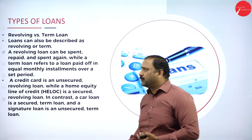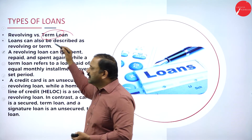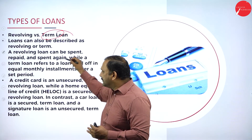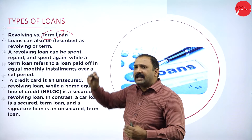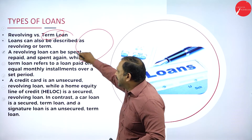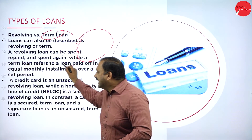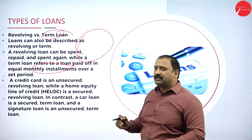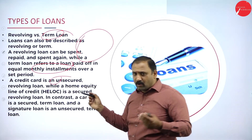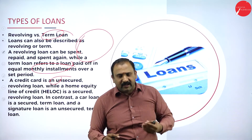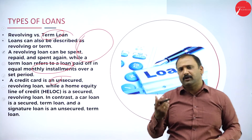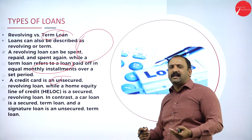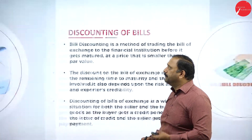Another type is the revolving versus term loan. A revolving loan is one that can be spent, repaid, and spent again — going in a circular manner — and can be paid on equal monthly installments. A credit card is an example of a revolving loan: you can use it for house expenses or any purpose and pay back on a particular timeline. A term loan, on the other hand, is for a fixed period with structured repayment.